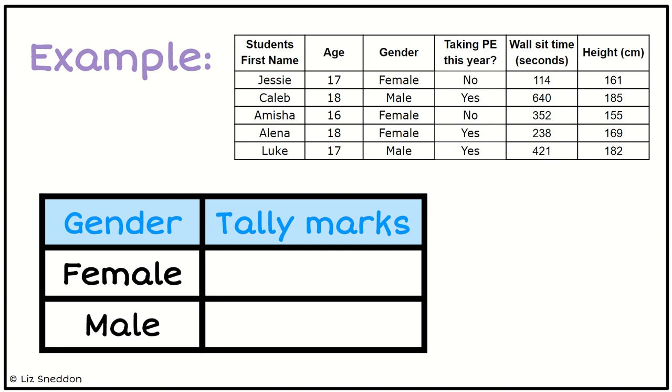Now I need to go and count that data. The first person, Jessie, she is female, so I'm going to put a tally mark in the female box. The second person, Caleb, is a male, so I'm going to put a tally in the male box. The third person is Amisha, she's a female, so I'll tally for female.